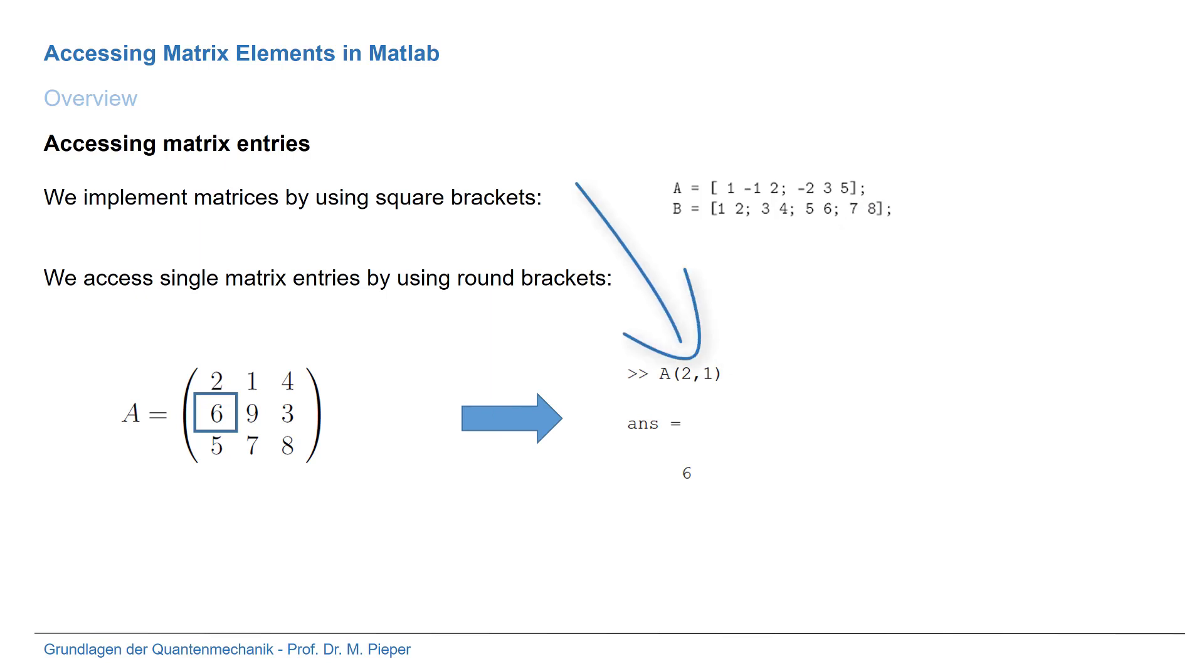The first index is a 2 because we are interested in the second row, and the second index is a 1 because we access the first column. So in MATLAB it's similar as in mathematics. The first index always corresponds to the row and the second index always corresponds to the column.